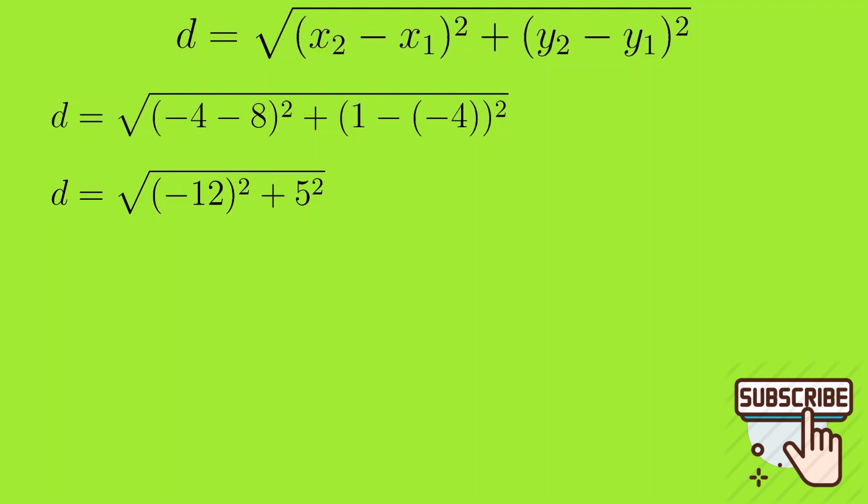So minus 12 squared is 144, 5 squared is 25. So d is equal to the square root of 144 plus 25, that is the square root of 169. So d is equal to 13 units.